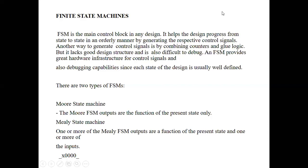There are two types of FSM. The first is the Moore state machine and the second one is the Mealy state machine. In the Moore state machine, the output depends only on the present state, but in the Mealy state machine the output depends on the present state as well as the present input.